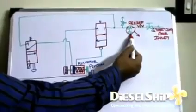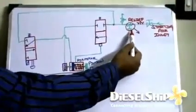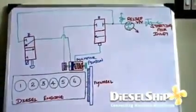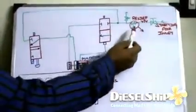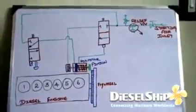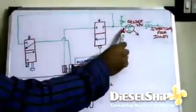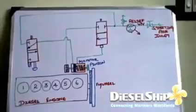For bigger engines, if you want to start with air motor, 30 bar is required. If it's a small engine, 30 bar is not required. So this pressure regulating valve may be adjusted for 20 bar, so it reduces the pressure and then gives to the starting circuit.